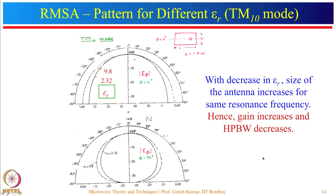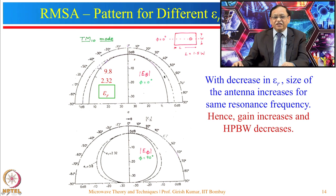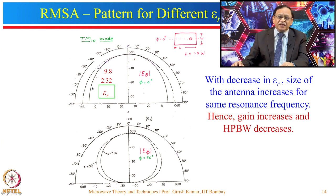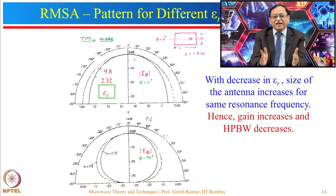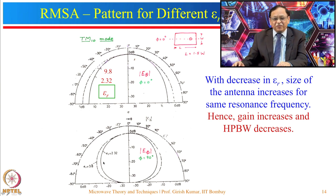The radiation pattern of the rectangular microstrip antenna for TM10 mode shows E-plane (E_theta in phi = 0 degree plane) and H-plane (E_phi in phi = 90 degree plane) patterns. Two plots are shown: one for epsilon_r = 2.32 and one for epsilon_r = 9.8. As epsilon_r is reduced from 9.8 to 2.32, the half-power beamwidth reduces in both E- and H-planes because the size increases, which increases gain and narrows the beam.